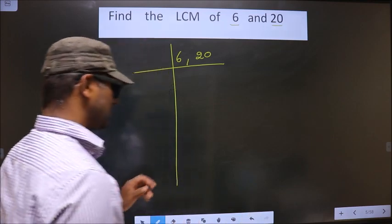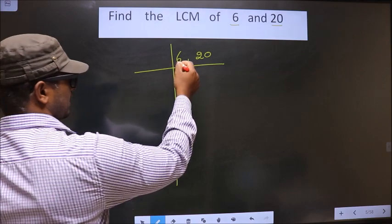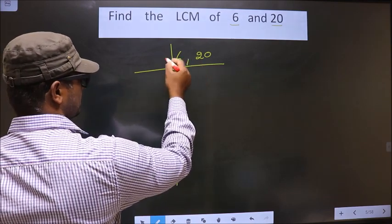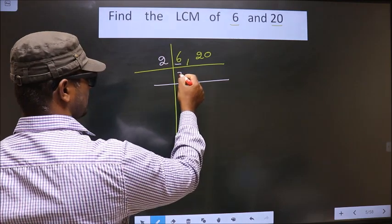Now, this is your step 1. Next, here we have the number 6. 6 is an even, so we take 2 here. 2, 3, 6.